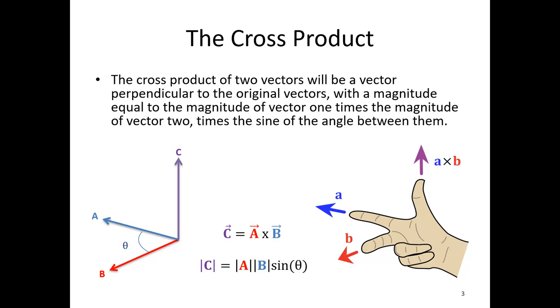If we did the opposite, so if we had b cross a, basically your hand would flip over, and your thumb would be pointing in the opposite direction. So this right-hand rule is going to figure out which of the two perpendicular directions the cross product vector is actually going in.